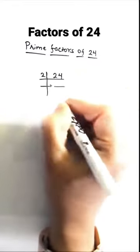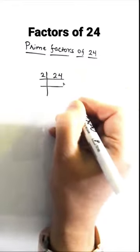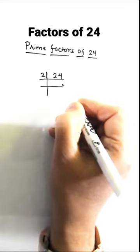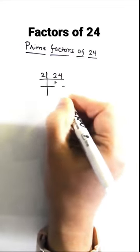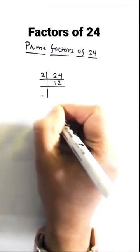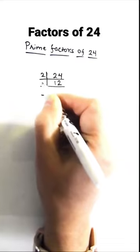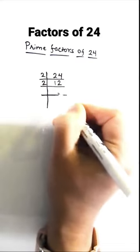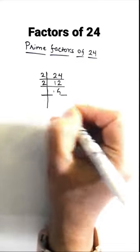As 24 is an even number, it is easily divisible by 2. 2 times 1 is 2, 2 times 2 is 4. 12 is also divisible by 2 — 2 times 6 is 12.